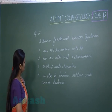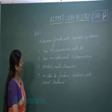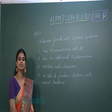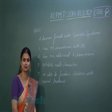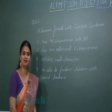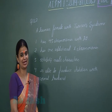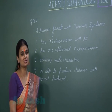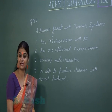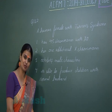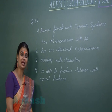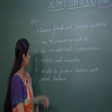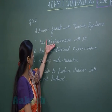Question number 167: a human female with Turner syndrome. Turner syndrome is a case of monosomy in which there is loss of one X chromosome. Humans have 46 chromosomes. If there is loss of one X chromosome, instead of 46, the number of chromosomes becomes 45.